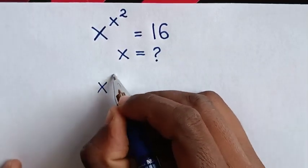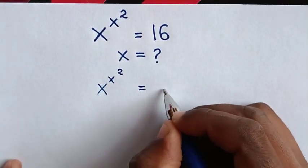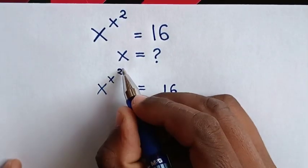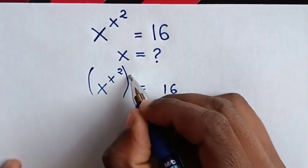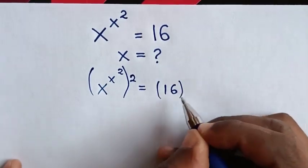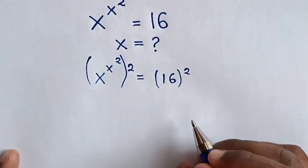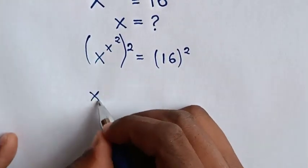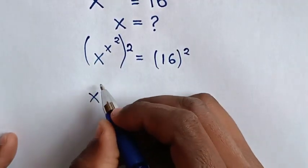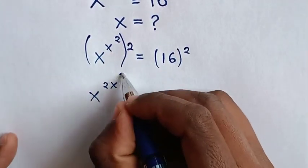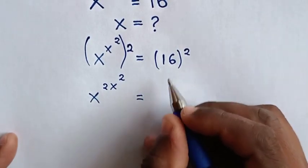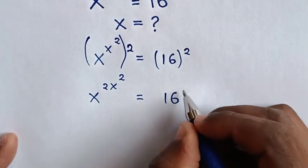So from x^(x^2) = 16, we'll multiply by power of 2 in both sides. Then our equation will be x^(2x) power of 2 is equal to 16 power of 2.